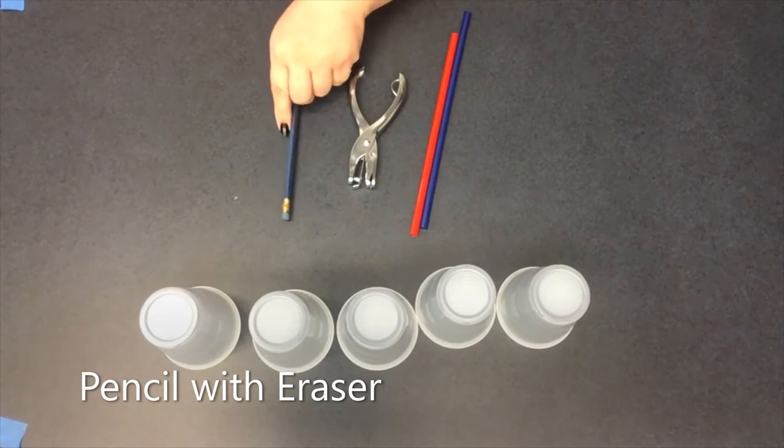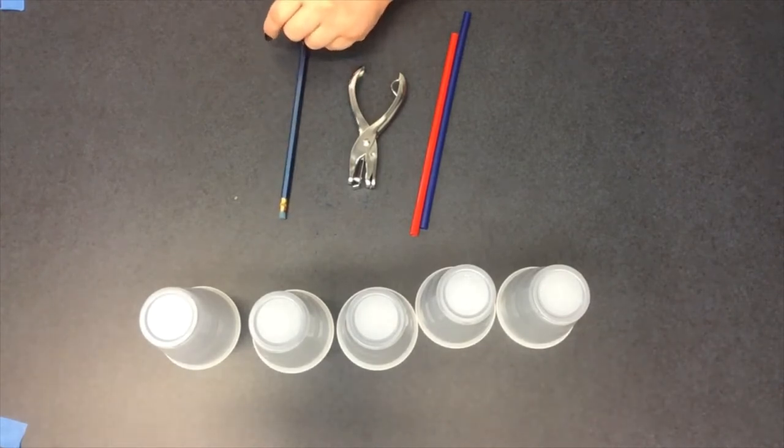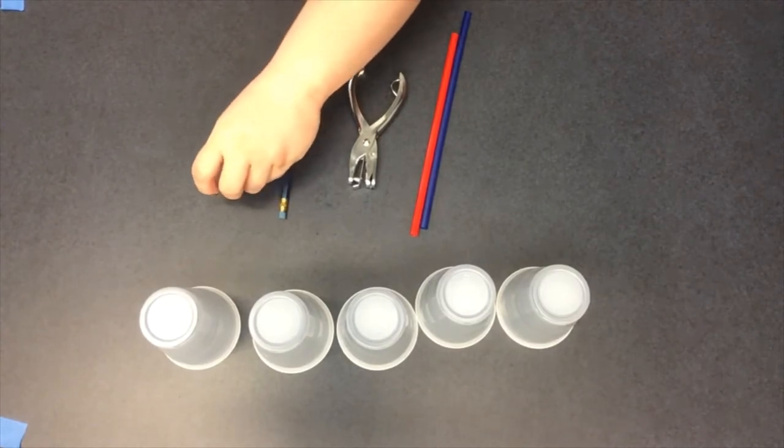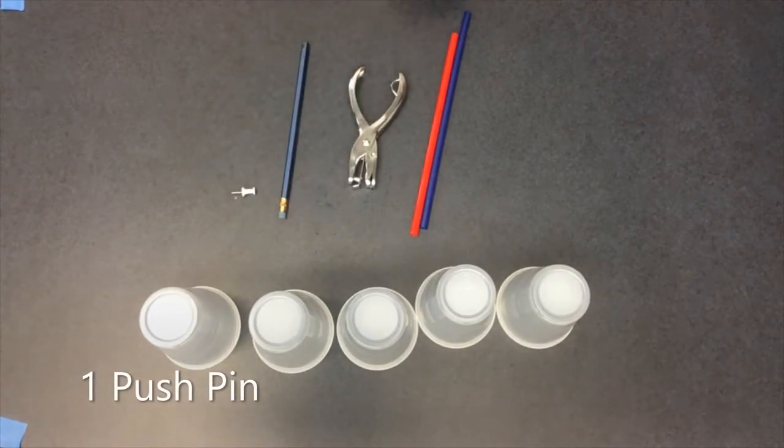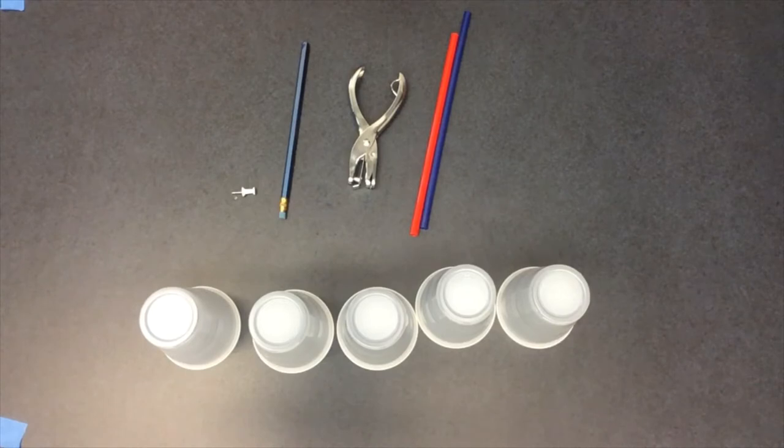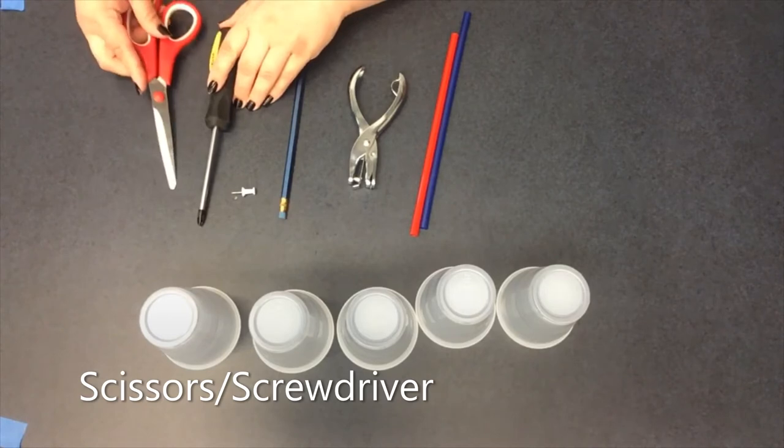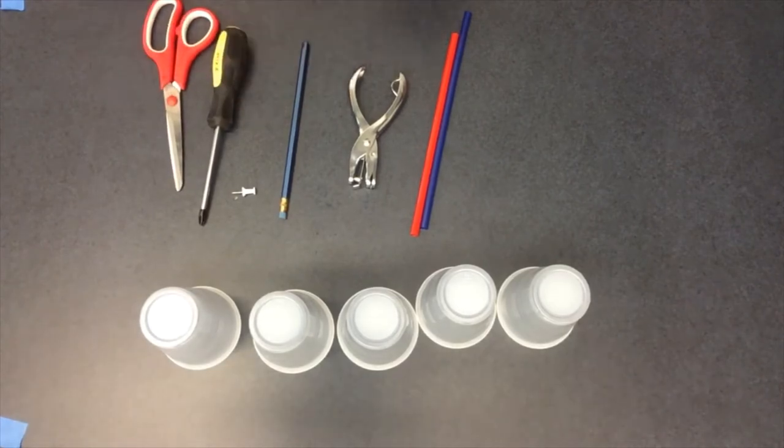And next, you'll want a pencil with an eraser on it. So if you have any old pencils lying around your house, and the pencil's still okay but the eraser kind of sucks, that'd be a great pencil for this project. And one push pin, just like that. And the last thing that we need for our project today is something to put a hole in the bottom of our cup to put the pencil through. So I have a screwdriver and some scissors to do that. Alright, let's get started.